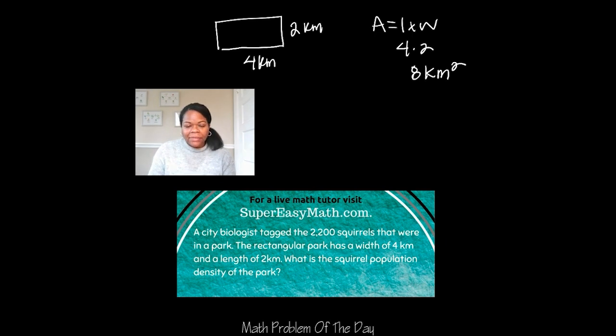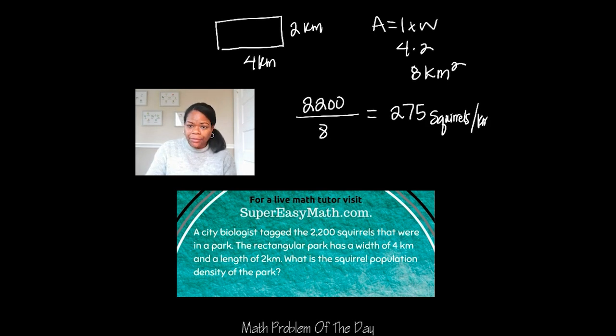Now it tells me that the biologist tagged 2,200 squirrels that were in the park. So I know that I need to take that 2,200 and divide it by eight. And when you do that, you get 275 squirrels per kilometer.